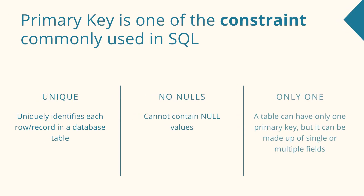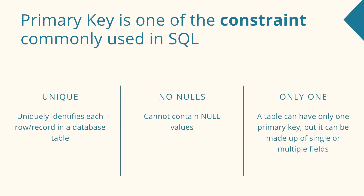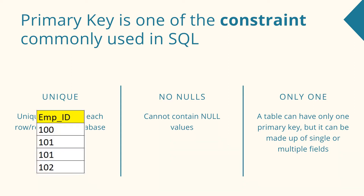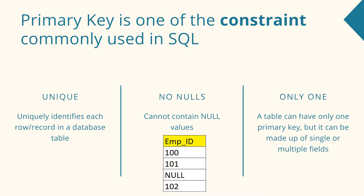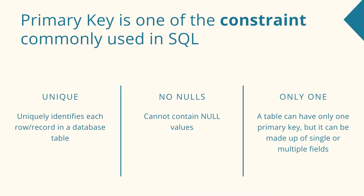A primary key column cannot contain duplicate values, which means it stores only unique records. For example, in this employee ID column, if this column is set as a primary key, repetition of the column ID is not allowed. Also, there cannot be nulls in the primary key column — if you want to add any new row, you must enter some value in the primary key column.